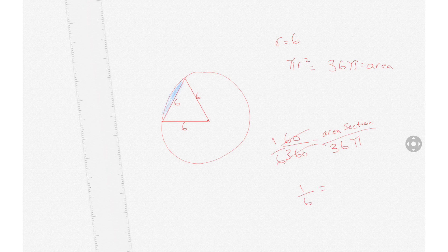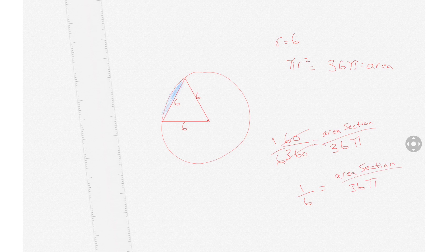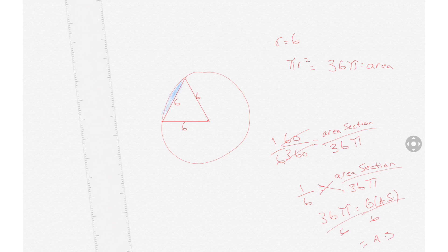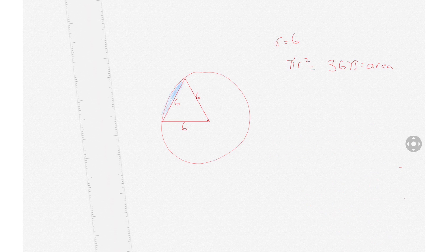And then we could simplify the 60 over 360 to 1/6. So we get 1/6 equals the area of the section over 36 pi. Then we cross multiply. We get 36 pi equals 6 times the area of the section, and then divide each side by 6. So the area of that section is 6 pi.